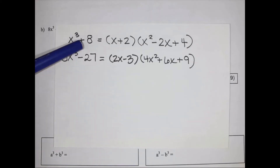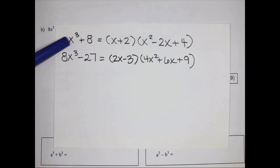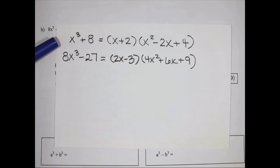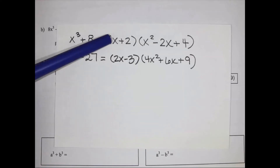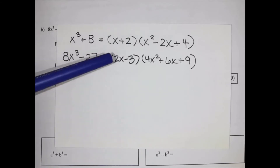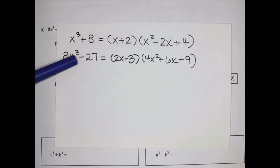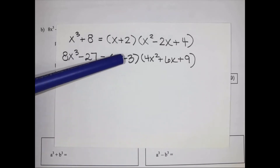Well, 8 is 2 to the power of 3, and 27 is 3 to the power of 3. To get that first bracket, all you really need to do is take the cube root of x cubed to get x, and the cube root of 8 to get 2. Similarly, the cube root of 8 gives 2, the cube root of x cubed gives x, and the cube root of 27 gives 3.